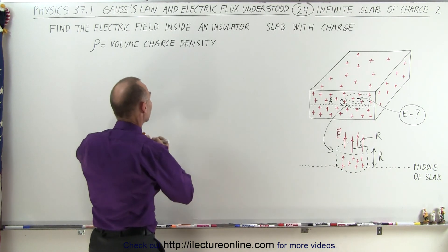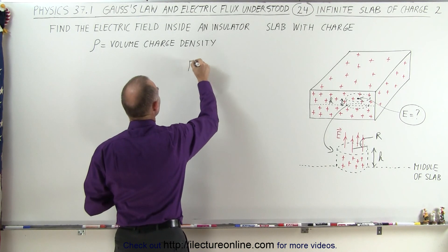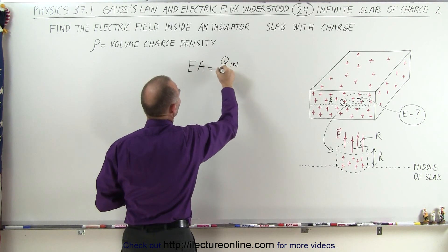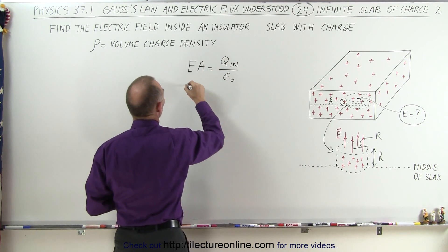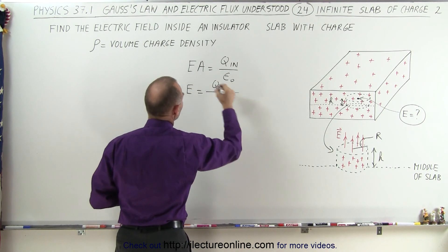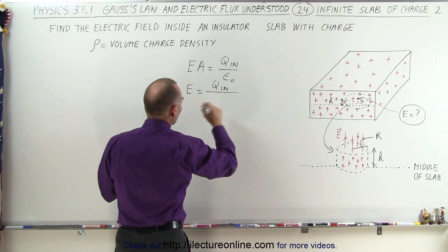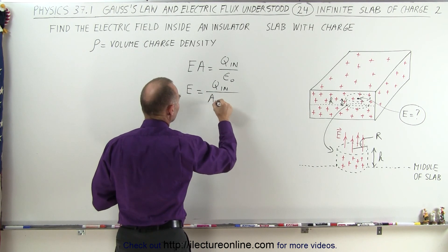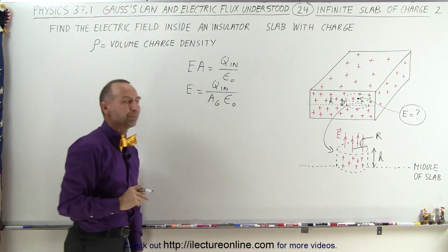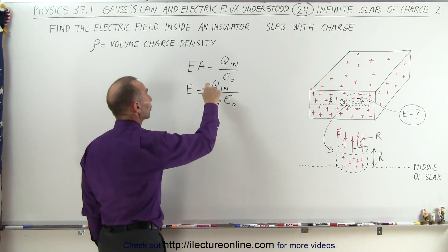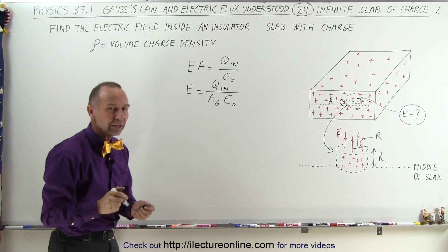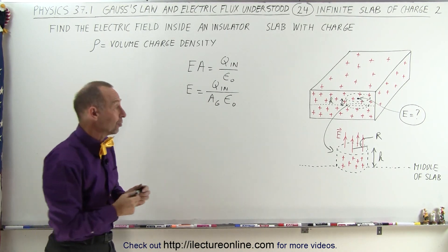Now we're ready to use Gauss's law. Gauss's law tells us that E times A is equal to charge inside divided by epsilon sub-naught, or the magnitude of the electric field is equal to Q inside divided by the surface area of the Gaussian surface, divided by epsilon sub-naught. So now we have to determine what Q inside is and what A sub-G is, the surface area of the Gaussian surface that matters.